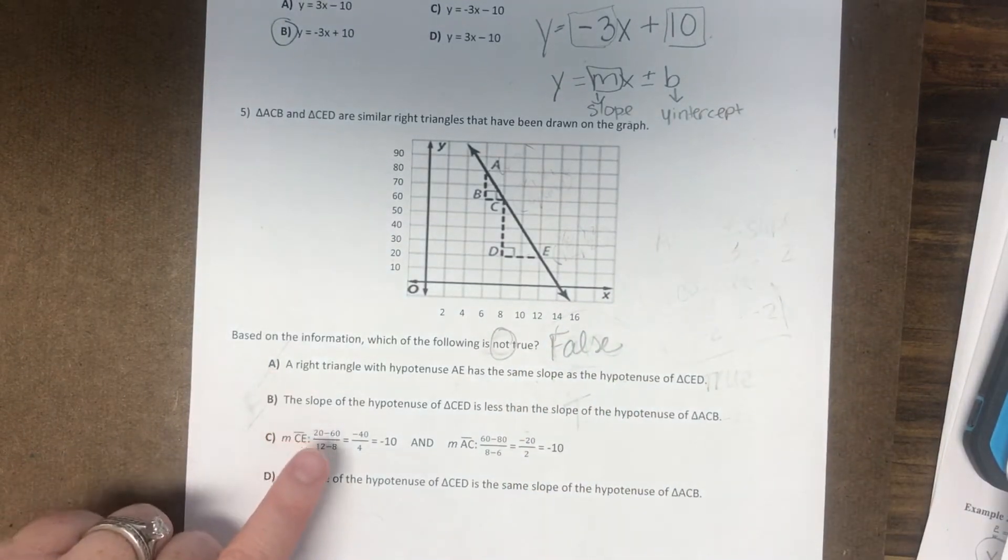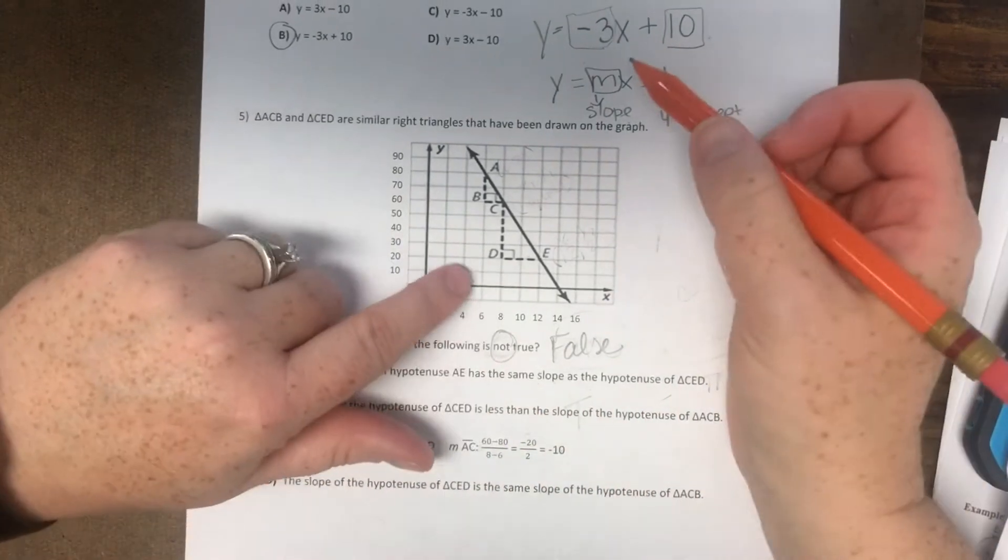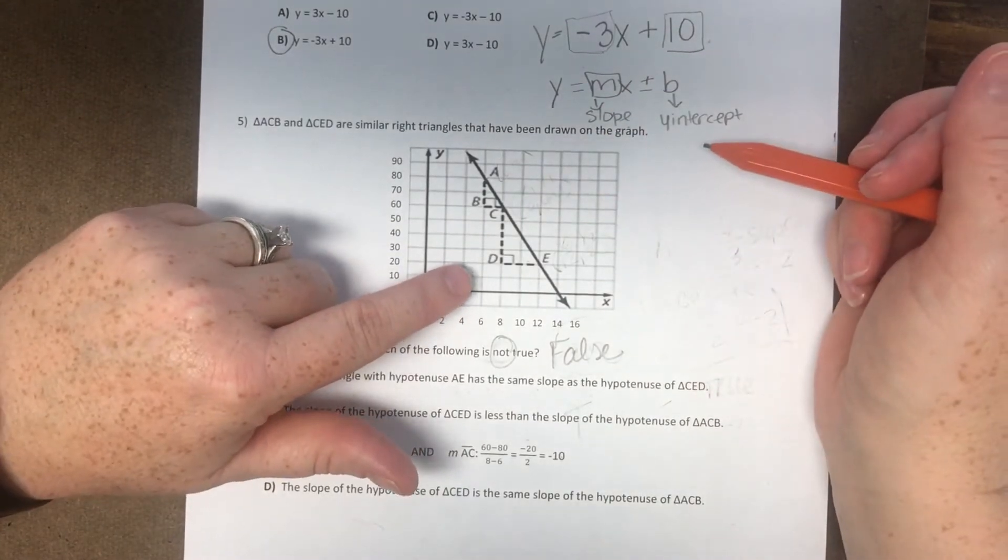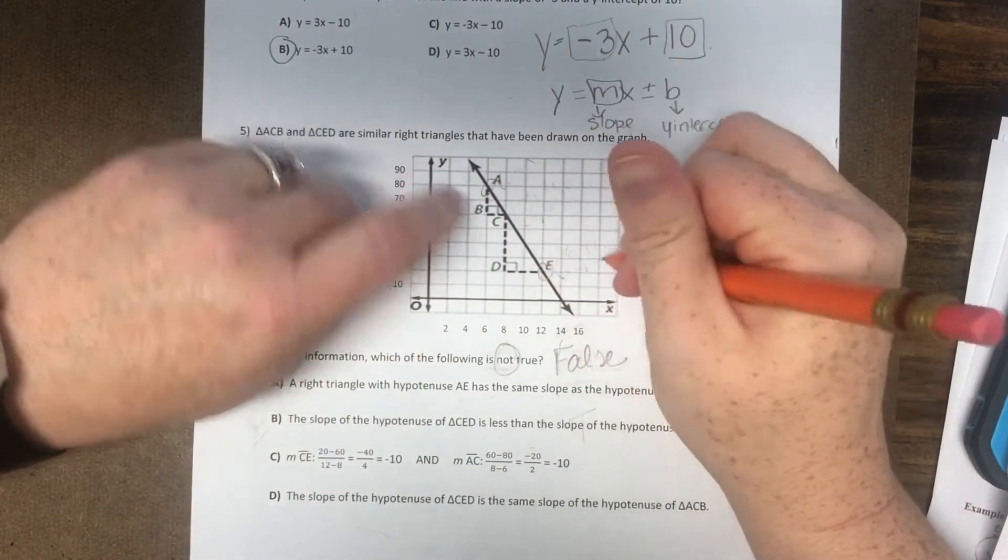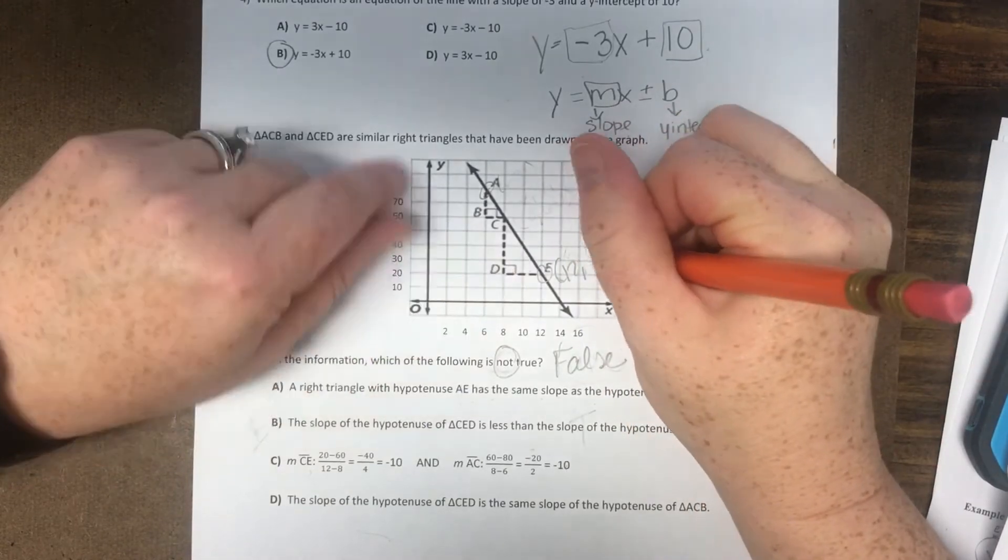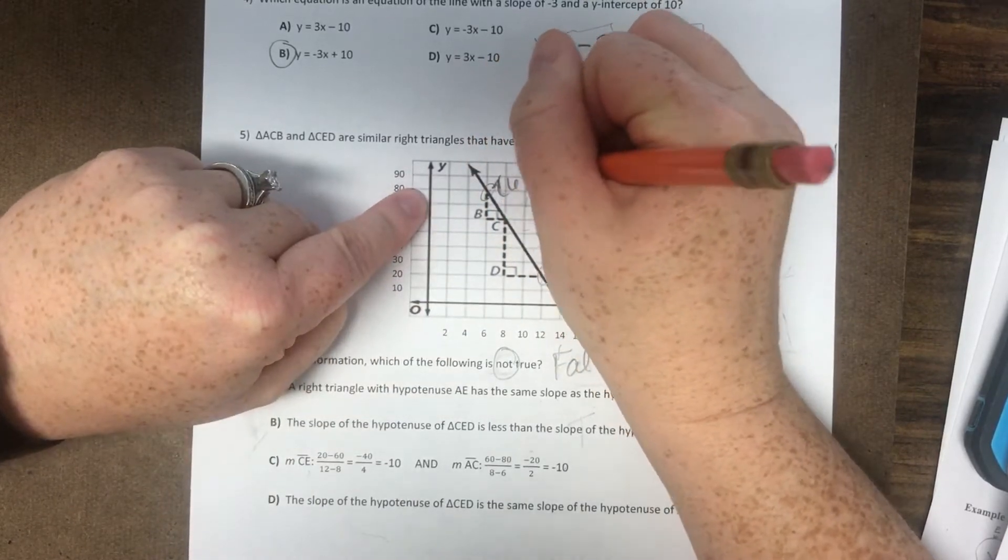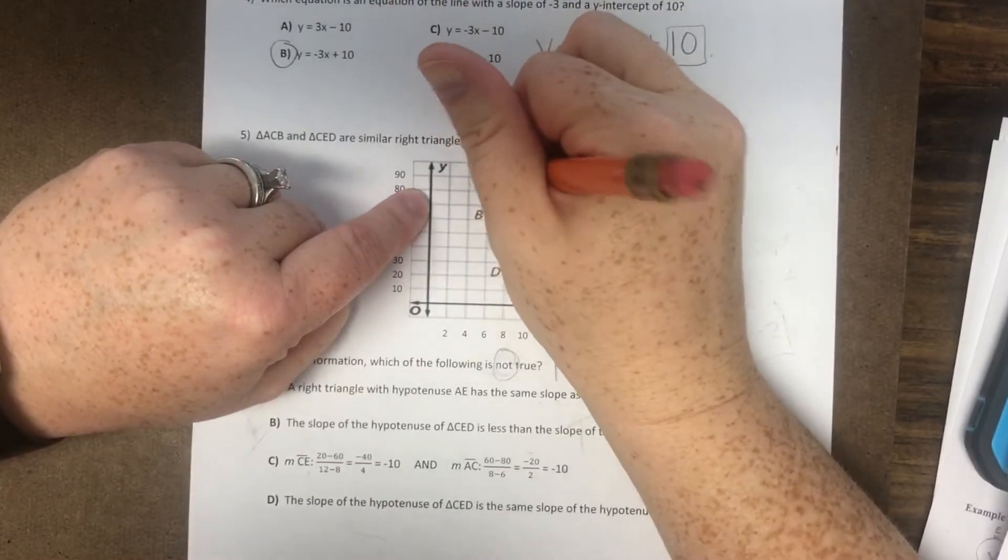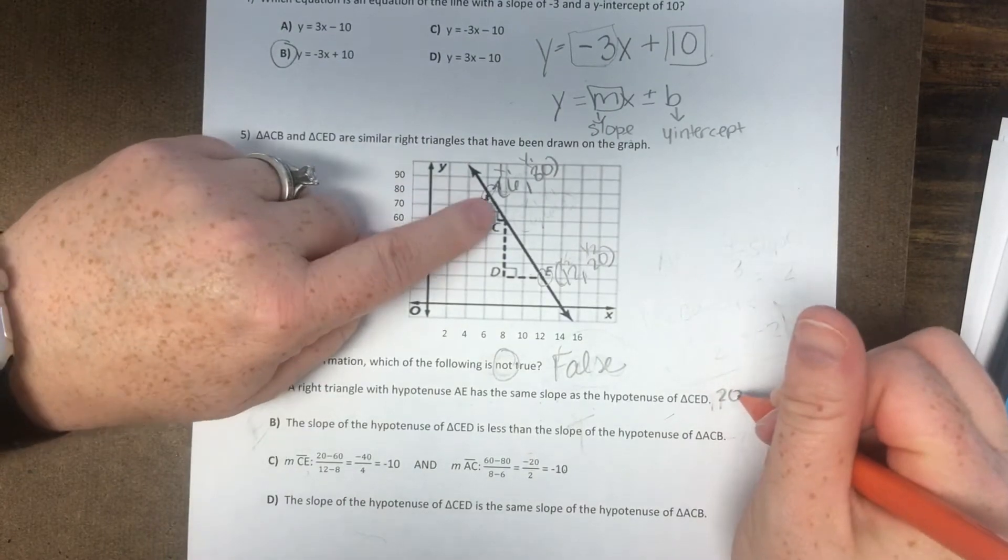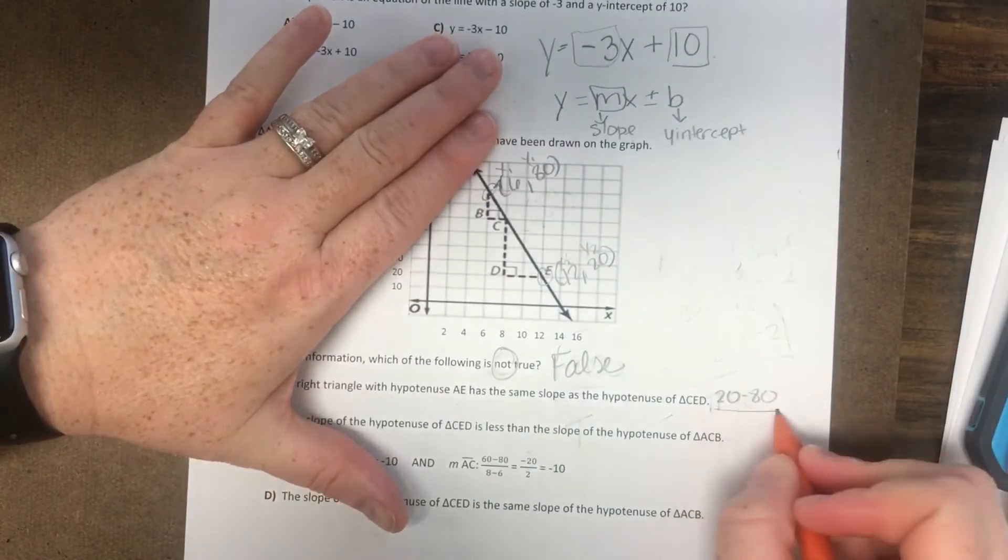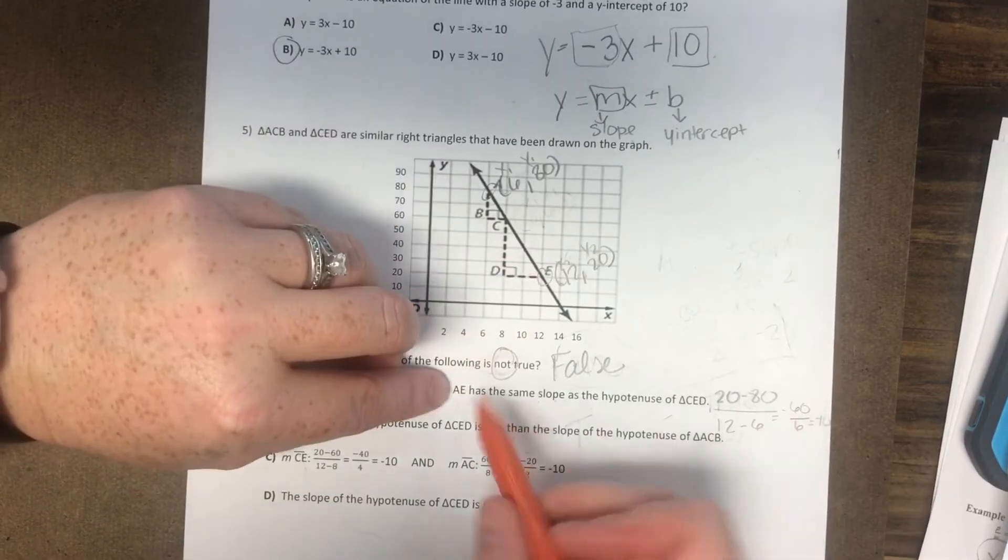Look at letter A: a right triangle with hypotenuse AE has the same slope as CED. If you look at the slope, you can figure out the points. The slope of AE is going to be this point and this point. So this is 12, 20 and this point is 6, 80. So the slope of that line would be X1, Y1, X2, Y2. So it would be 20 minus 80 over 12 minus 6. This is negative 60 over 6, which is negative 10. So that would be the slope of AE.